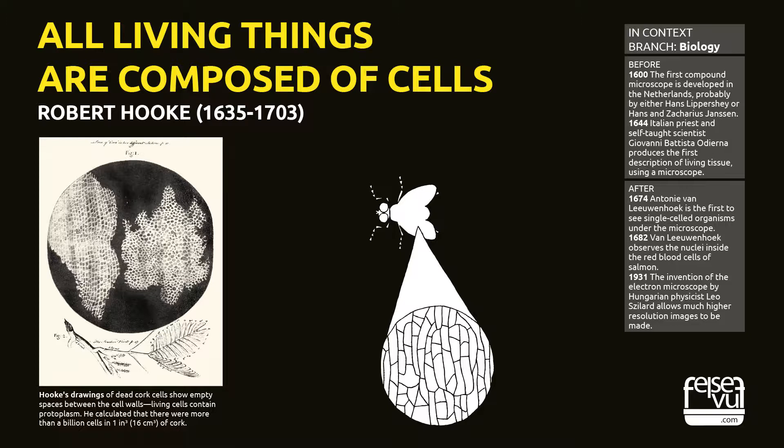English scientist Robert Hooke was not the first to observe living things using a microscope. However, with the publication of his Micrographia in 1665, he became the first best-selling popular science author, stunning his readers with the new science of microscopy. Accurate copperplate drawings made by Hooke himself showed objects the public had never seen before — the detailed anatomies of lice and fleas.